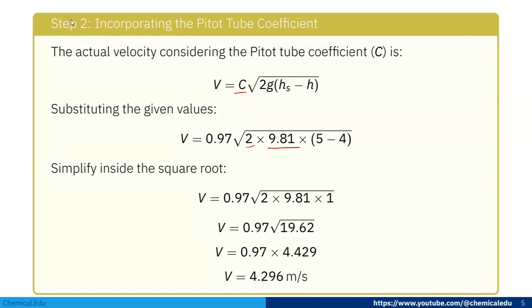Simplifying inside the square root: V = 0.97√(2 × 9.81 × 1), which gives V = 0.97√19.62. Since √19.62 = 4.429, we get V = 0.97 × 4.429